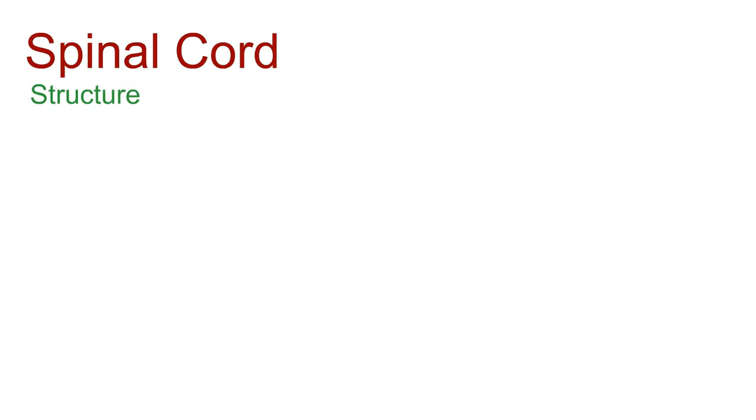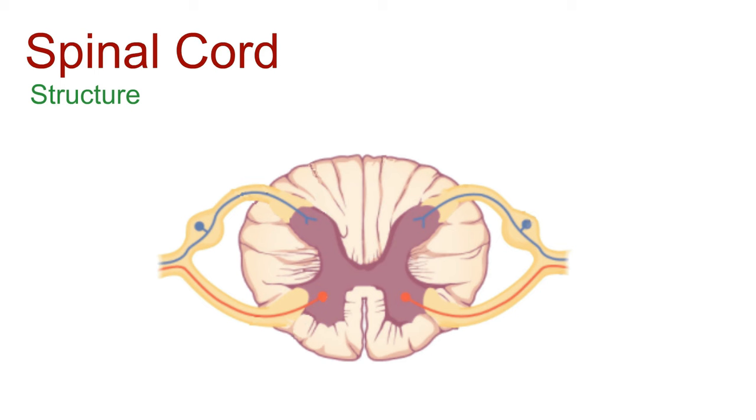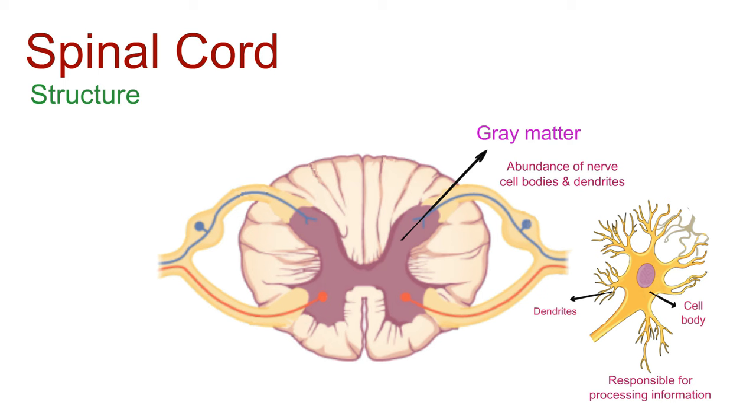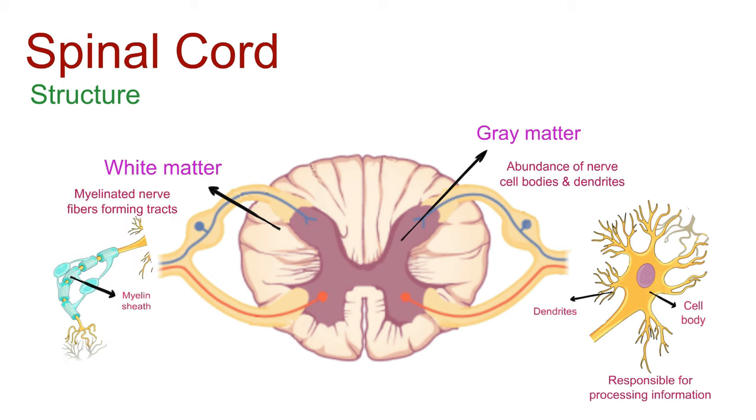Let's have a look at its structure. At the center of the spinal cord, we find gray matter. It appears gray due to the abundance of nerve cell bodies and dendrites responsible for processing information. Surrounding the gray matter is the white matter, giving the spinal cord its whitish color. It's made up of myelinated nerve fibers forming tracts, facilitating communication between the brain and peripheral nerves.